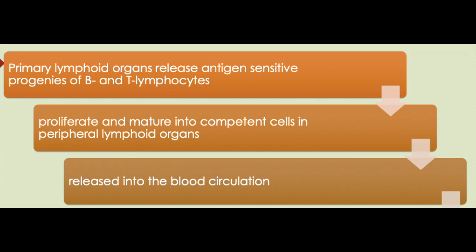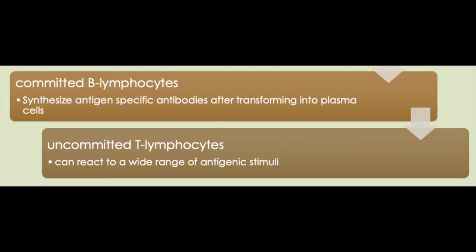A key difference between B and T lymphocytes: B lymphocytes are differentiated in bone marrow, T lymphocytes in the thymus. B lymphocytes, after maturation in peripheral lymphoid organs, produce antibodies specific to particular antigens — they are committed cells. T lymphocytes, on the other hand, interact with a wide range of antigens non-specifically — they are uncommitted cells. B lymphocytes are antigen-specific; T lymphocytes can interact with many different antigens.